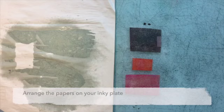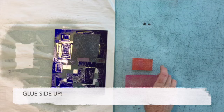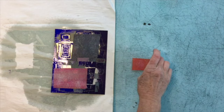Now keeping your papers upside down, you're going to arrange them on the inky plate. It's really important that you keep it with the glue side up. This is a bit counterintuitive and people often make mistakes but it's important that the glue side is facing upwards.